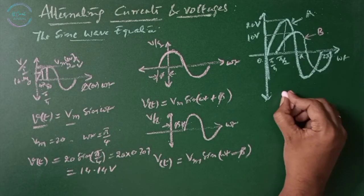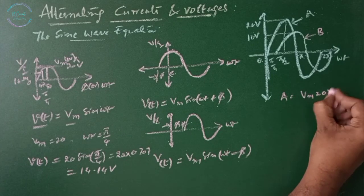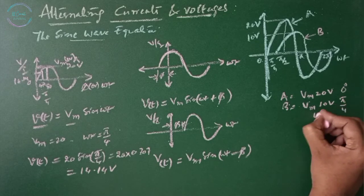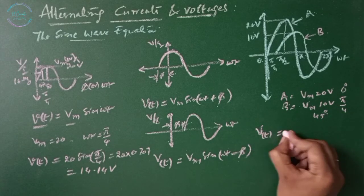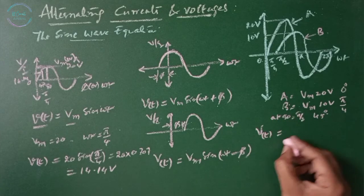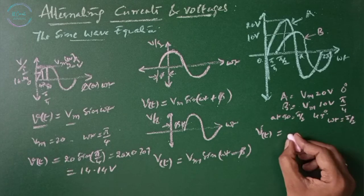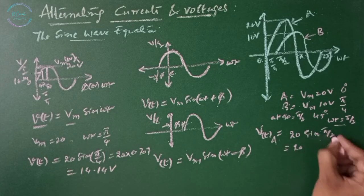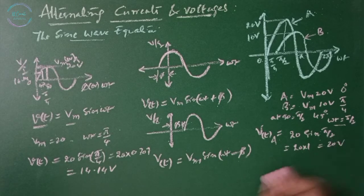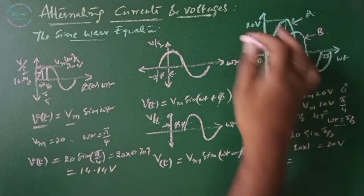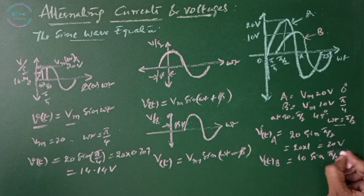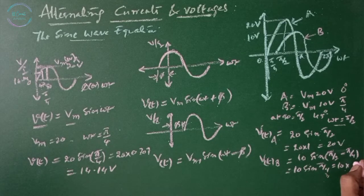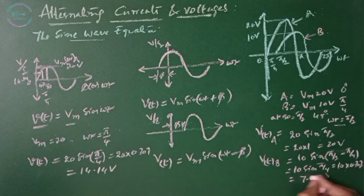Consider two waves: A with a maximum value of 20 V starting at 0 degrees, and B with a maximum value of 10 V starting at pi by 4 (45 degrees). To find the instantaneous value at 90 degrees (pi by 2): for wave A, V equals 20 sine(pi/2), which equals 20 volts. For wave B, V equals 10 sine(pi/2 − pi/4) equals 10 sine(pi/4) equals 10 times 0.707, which equals 7.07 volts.